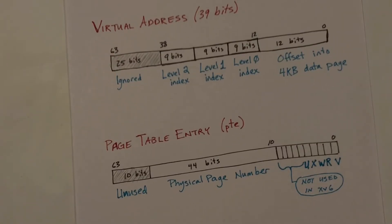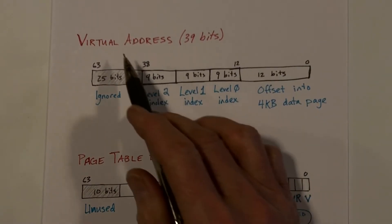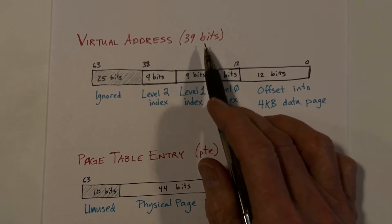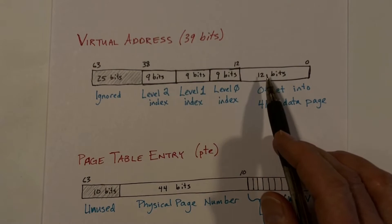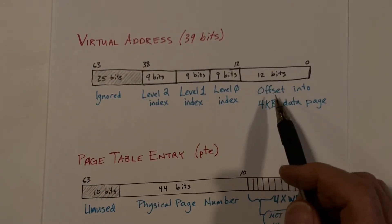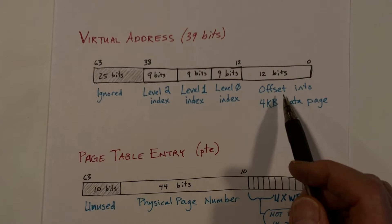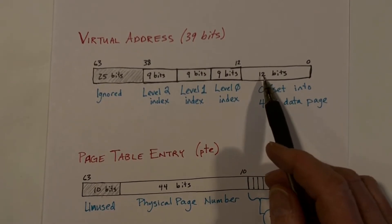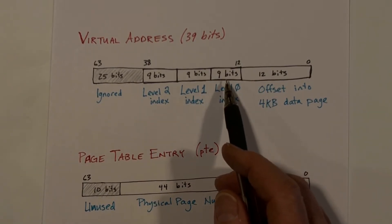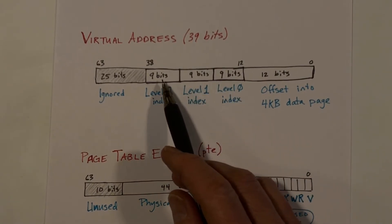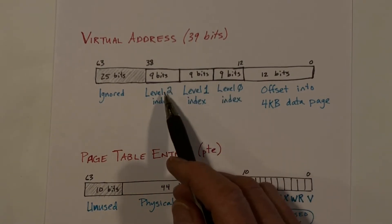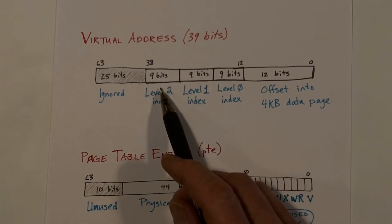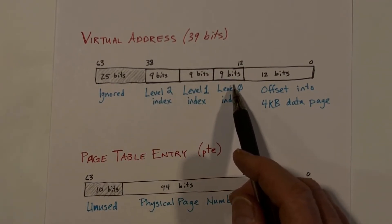Let's look at virtual addresses for the SV-39 scheme. A virtual address is 39 bits, and that address can be divided into an offset. All pages are 4 kilobytes in length, and since 2 to the 12th is 4K, we need exactly 12 bits to offset into the page. The remaining 27 bits are divided into three fields which access level 2, level 1, and level 0 of the page table.